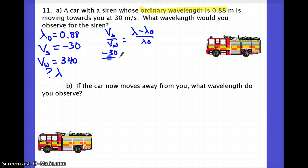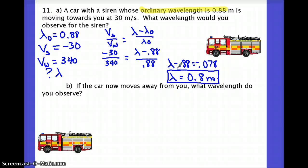So I've got negative 30 over 340 is lambda minus 0.88 over 0.88. Then we just have to do some math and solve this stuff. I really suggest that you pause the video and try to do the math yourself. Just to make sure that you understand how I got all of this. Make sure you get the same thing. I'm now going to add 0.88 to both sides. And so I get a lambda of 0.8 meters.